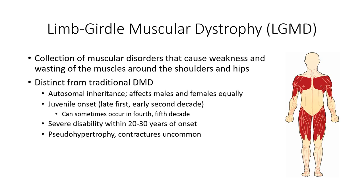There is also a delay in the onset of the disease, with symptoms first appearing in late adolescence and sometimes not until late adulthood. Progression of the disease is variable, but severe disability typically occurs 20 to 30 years following the first onset of symptoms, and in some instances will progress to include respiratory and cardiac muscle.